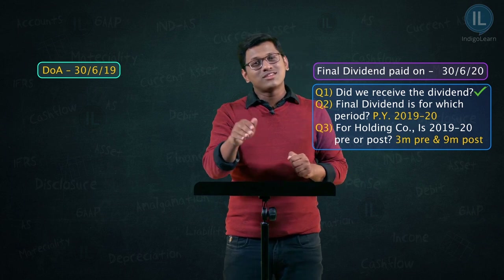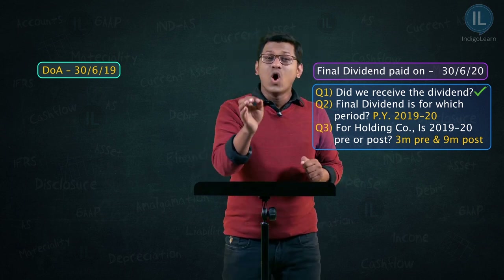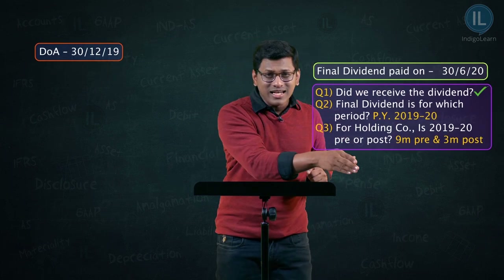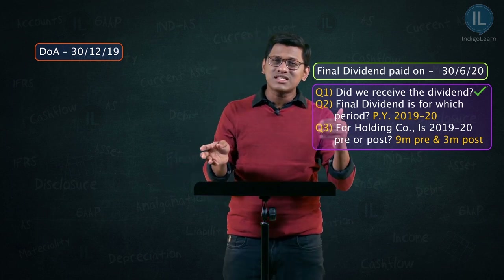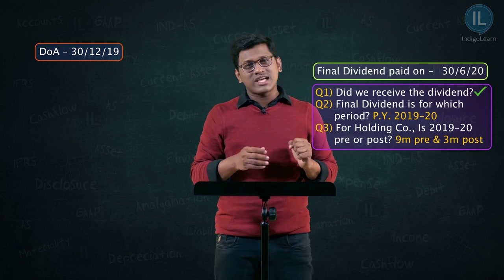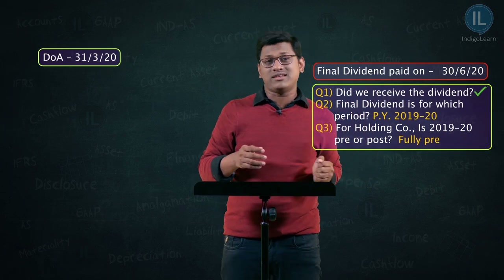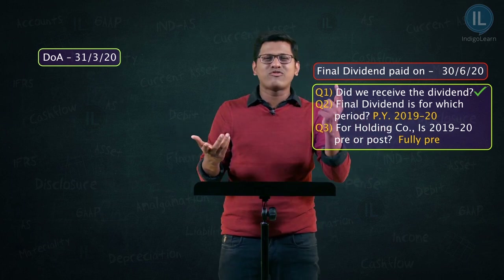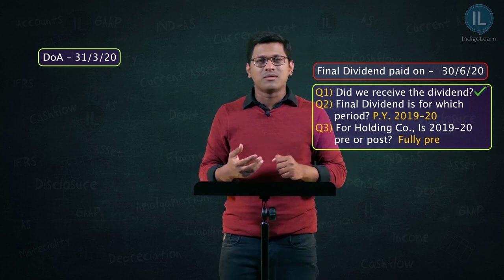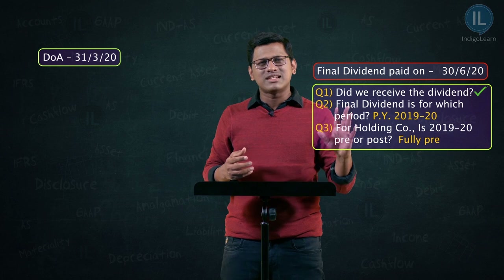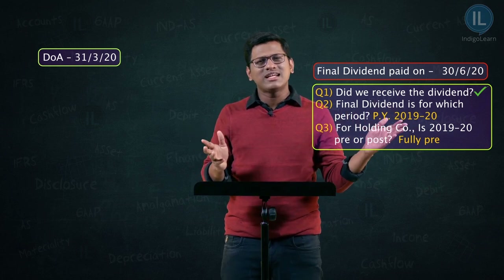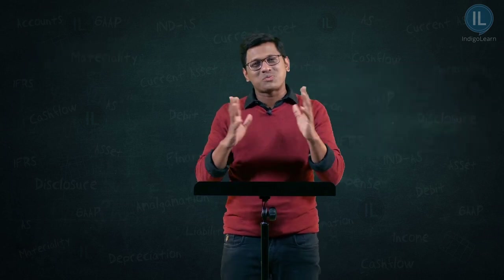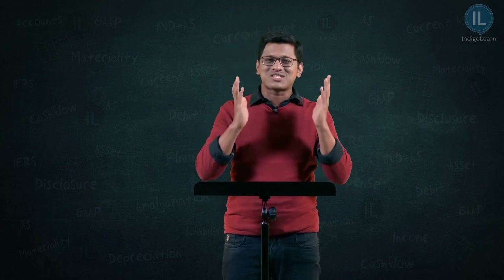What if we entered on 30th June 2019? Then 3 months would be pre-acquisition and 9 months post-acquisition. What if we entered on 31st December 2019? Then 9 months pre-acquisition and 3 months post-acquisition. What if we acquired the shares on 31st March 2020? Then for convenience, the entire dividend is treated as fully pre-acquisition. This is how you determine whether a dividend is pre-acquisition or post-acquisition.